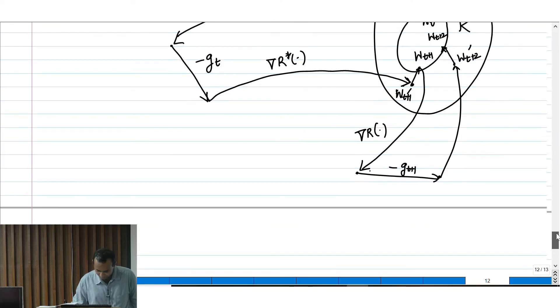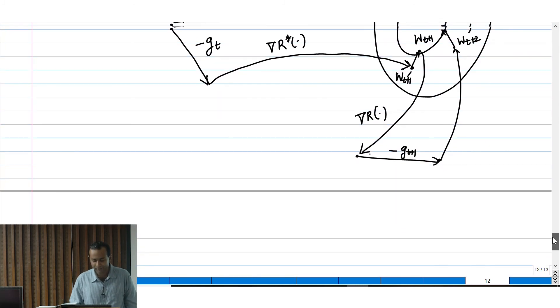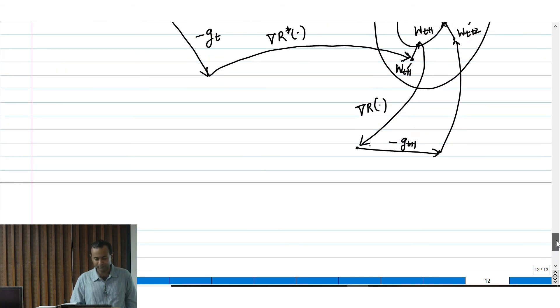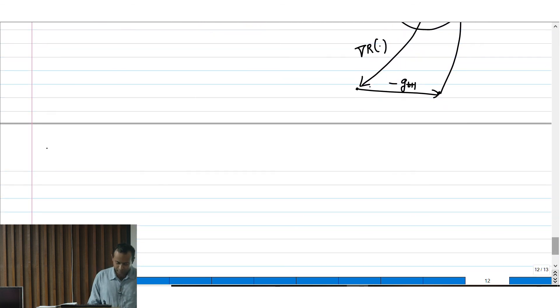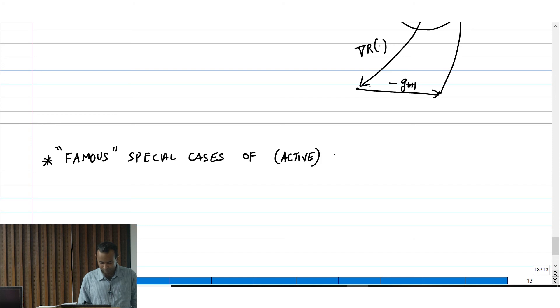Let us resume for the last one hour. We defined this more local or active version of online mirror descent that involves going back and forth from the latest point that was played in the set K. Just before we prove some performance guarantees for this, as we did in the last class for FTRL, we will do some famous special cases of this template of active OMD.